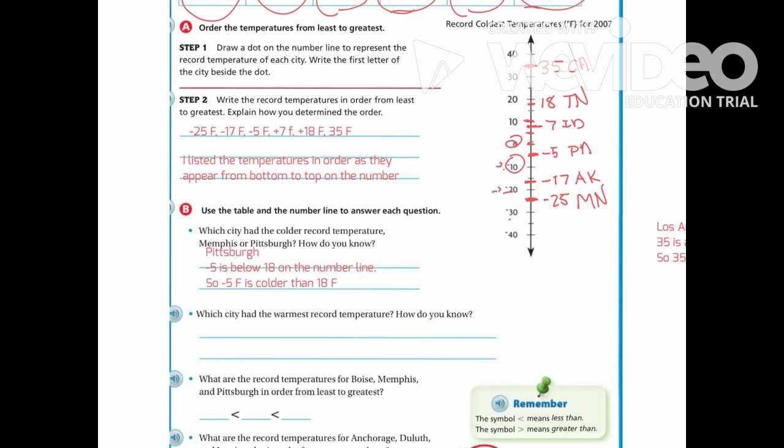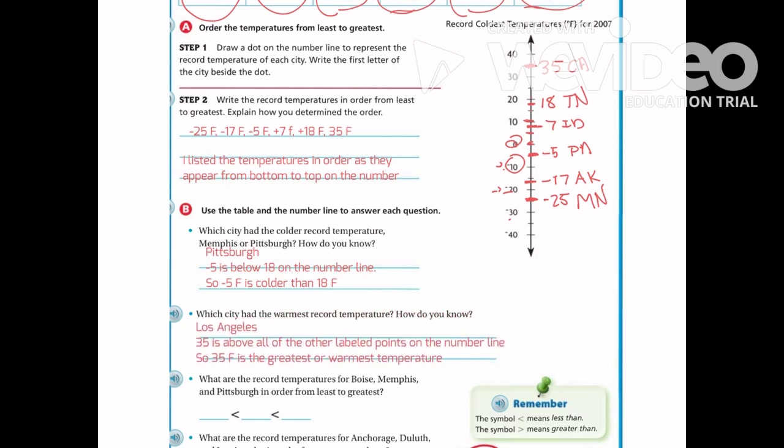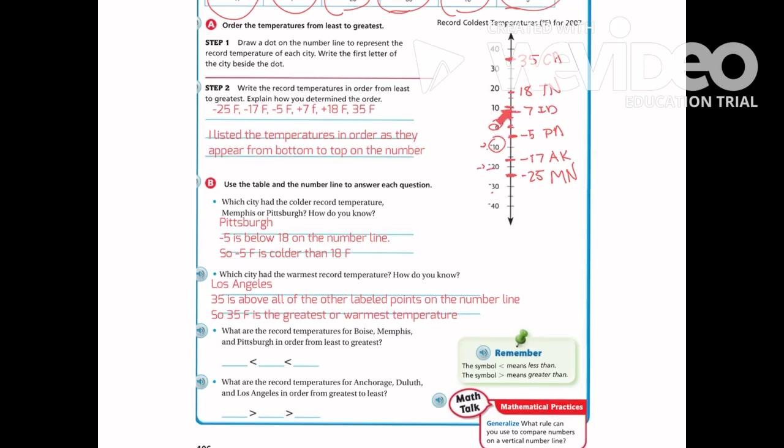Which city had the warmest temperature? Los Angeles is at positive 35, which is above all the other labeled points on the line, so it's the warmest. What are the record temperatures for Boise, Memphis, and Pittsburgh in order from least to greatest? That would be negative 5, then positive 7, then positive 18.